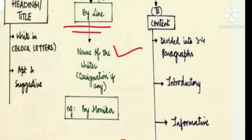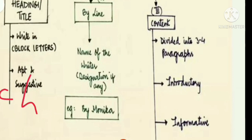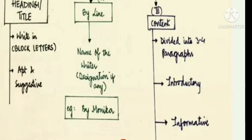Now let's move to the second element, which is the byline. In the byline you have to write your name. Keep in mind that we write articles for a school magazine and for a newspaper as well. When writing for a school magazine, you have to mention your name, class, and section — these three things are required. If you are writing for a newspaper, you just have to mention your name.